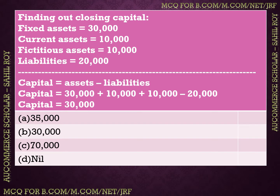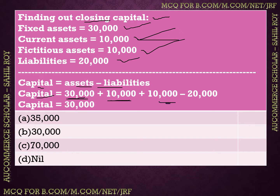The next question is: find out the closing capital. Fixed assets are Rs. 30,000, current assets are Rs. 10,000, fictitious assets are Rs. 10,000, and liabilities are Rs. 20,000. We know the formula: Capital = Assets − Liabilities. Total assets = 30,000 + 10,000 + 10,000 = Rs. 50,000. Minus liabilities Rs. 20,000, so capital is Rs. 30,000. Option B, Rs. 30,000, is the correct answer.